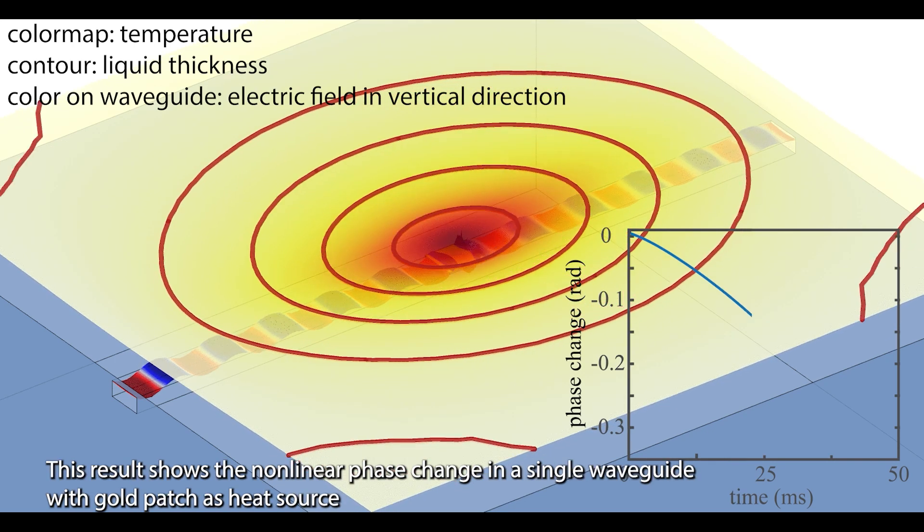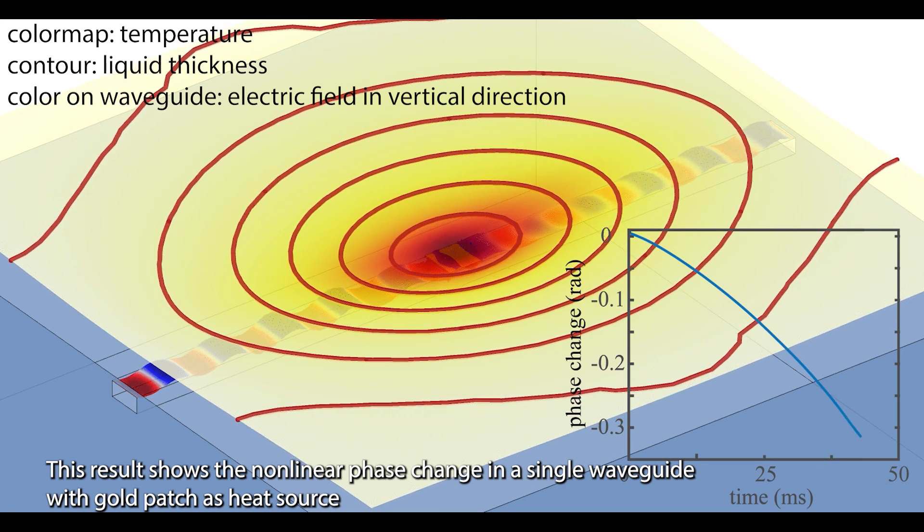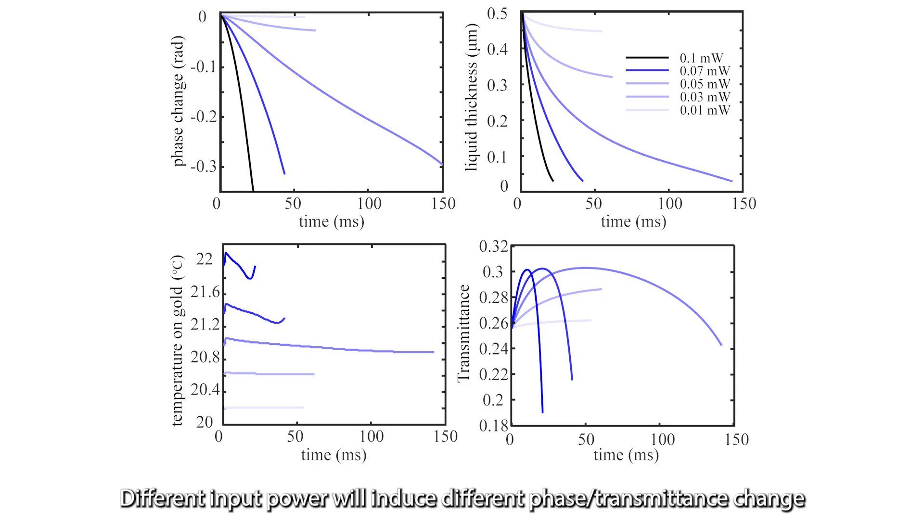This result shows the non-linear phase change in a single waveguide with gold patch as the heat source. Different input power will induce different phase or transmittance change.